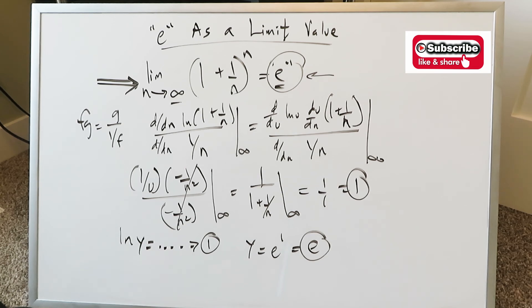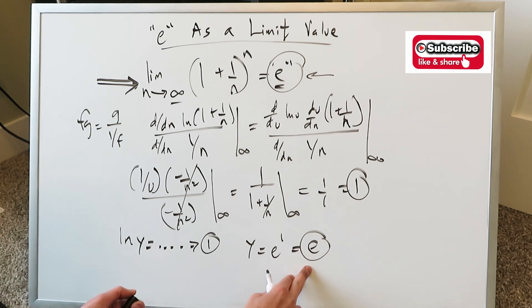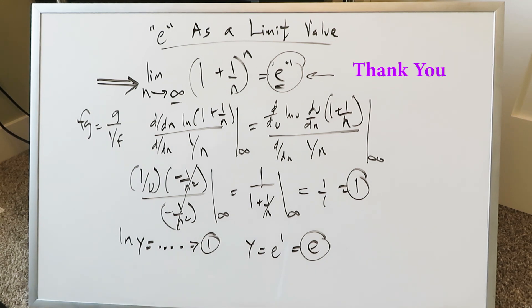Remember this right here is the route of the indeterminate power type which was converted into an indeterminate product type which was then converted into an indeterminate quotient form which was then evaluated all the way through to give you the limit value here of e. And this question has been completed utilizing this method of approach.